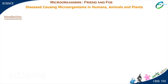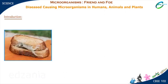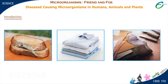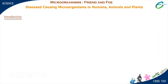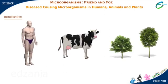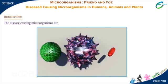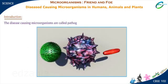Some cause diseases, some spoil the food, clothes and even leather. There are microorganisms which cause diseases not only in humans but also in animals and plants. The disease-causing microorganisms are called pathogens.